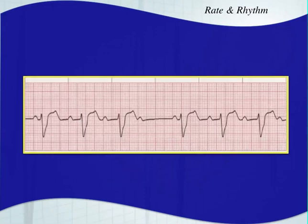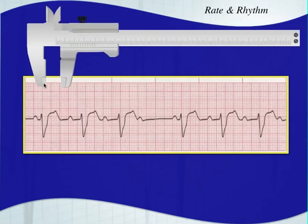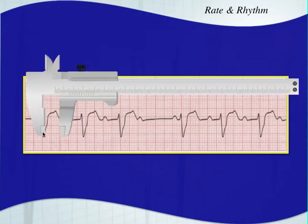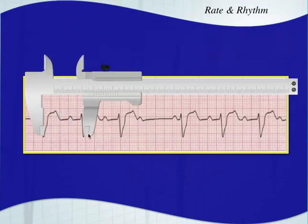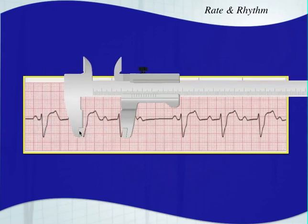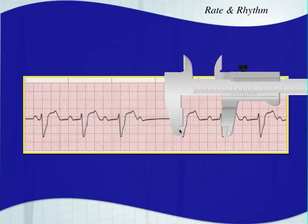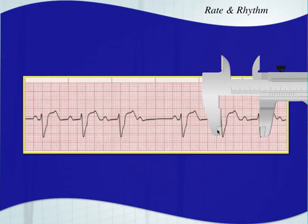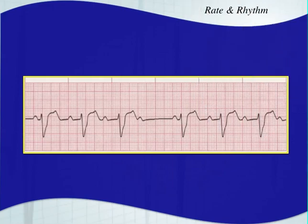We've already looked at this one in the last chapter. There's a pattern: these two spaces match these two spaces — a continued pattern of three beats with a space in between. That would be called regularly irregular. You can see six complexes, giving a heart rate of 60.